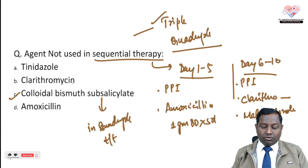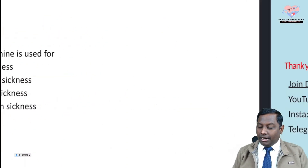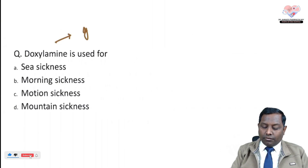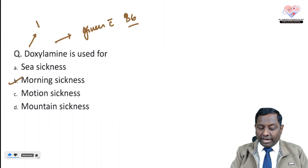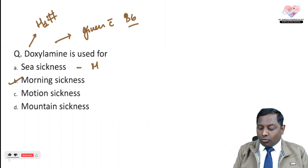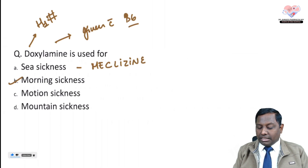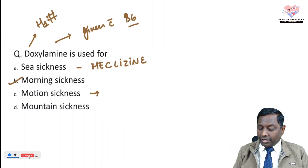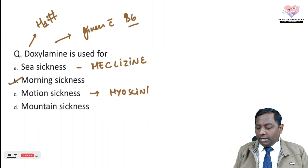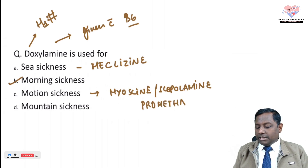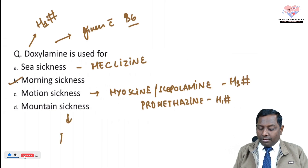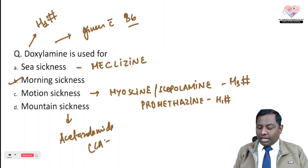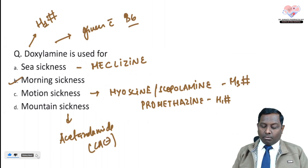The last question is about doxylamine. Doxylamine (doxinate) is always given with vitamin B6 and is mainly used for morning sickness. It is a highly sedative H1 antagonist. For sea/motion sickness, meclizine and buclizine can be used, or hyoscine/scopolamine. Promethazine, another H1 antagonist with anticholinergic M3-antagonist properties, is also used. For mountain sickness, acetazolamide — a carbonic anhydrase inhibitor — is utilized.